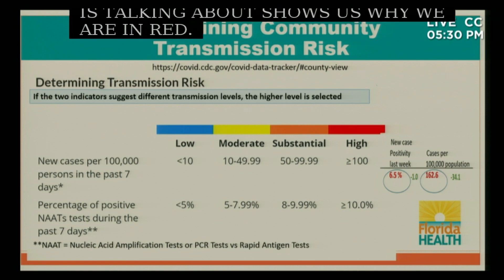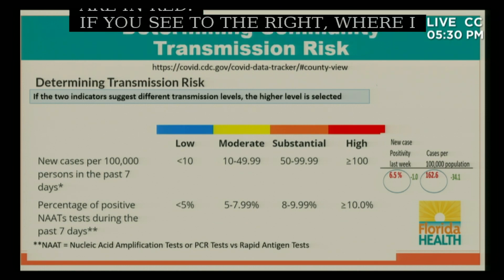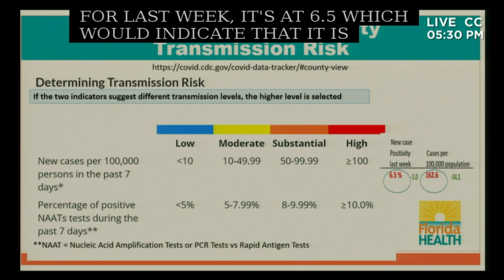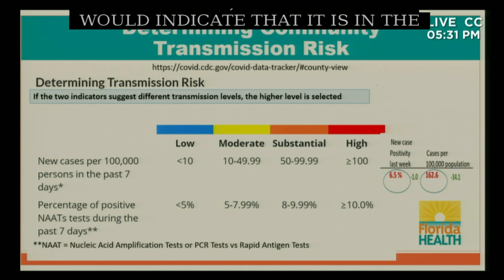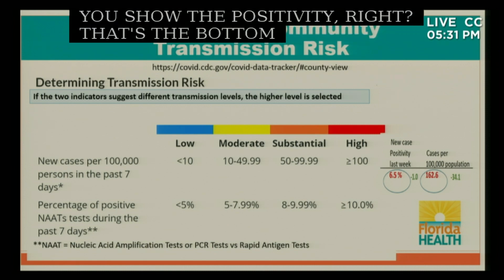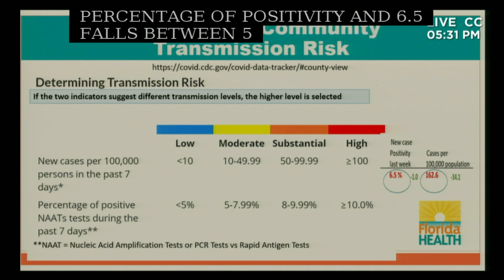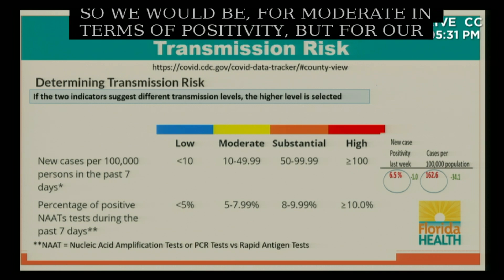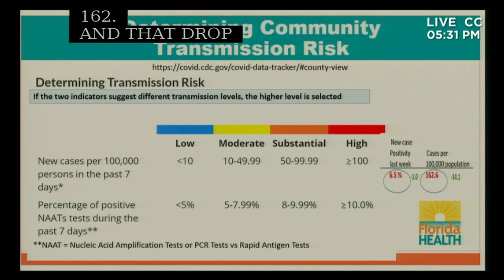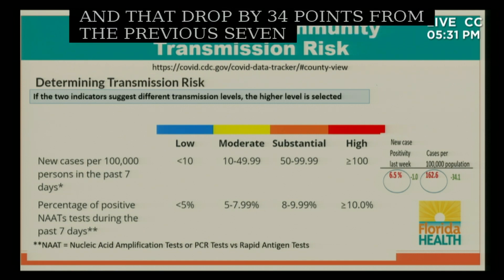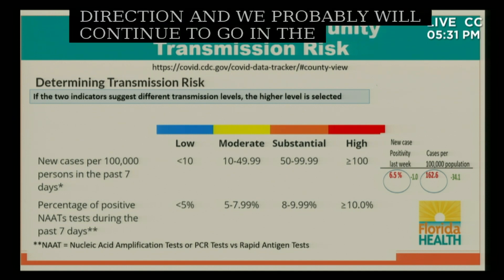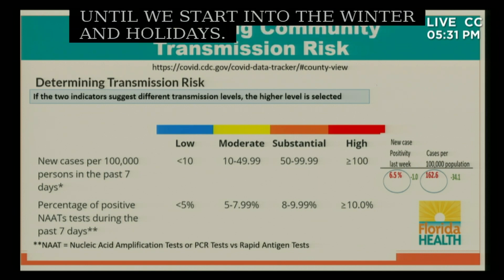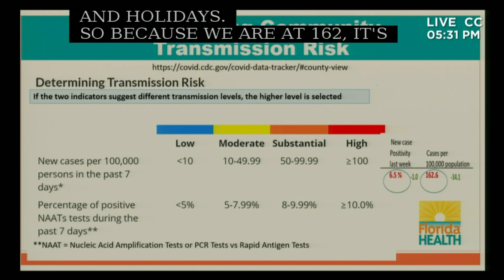This information shows us why we are in red. The new cases positivity for last week is at 6.5 percent, which falls between 5 and 7.9, putting us in moderate for positivity. But for our cases per 100,000 we're at 162, which dropped by 34 points from the previous seven days — so we're going in the right direction and will probably continue to do so for several weeks until we head into winter and the holidays. Because we're at 162, which is above 100, you pick the highest level to indicate the transmission risk in the community.